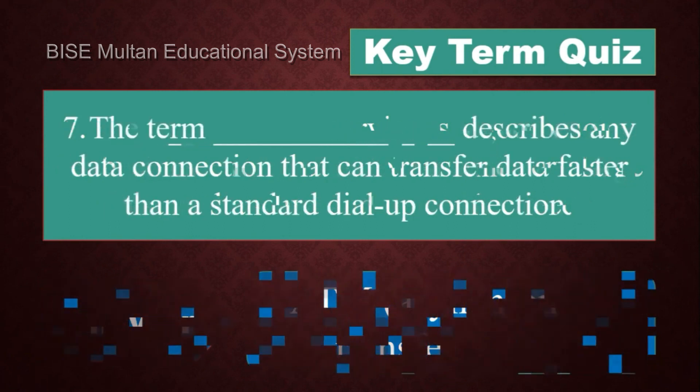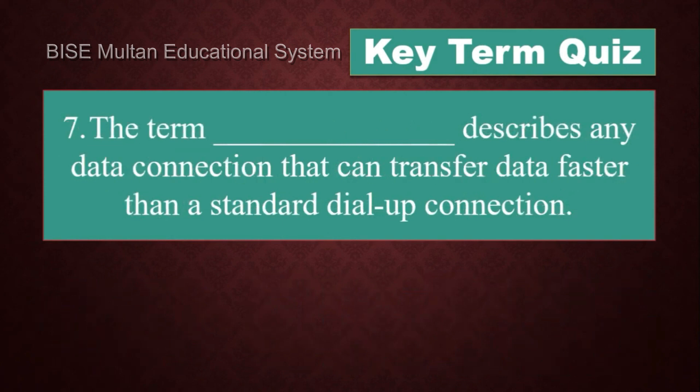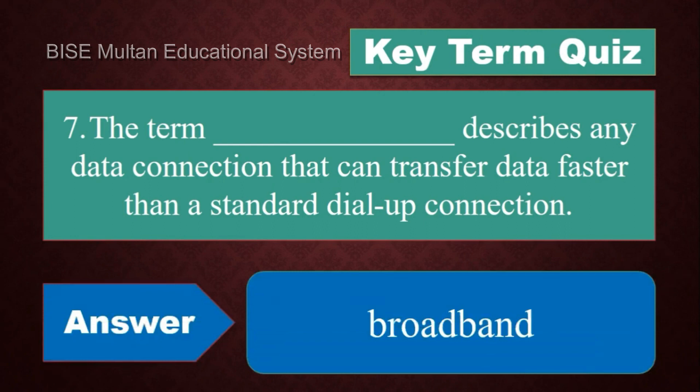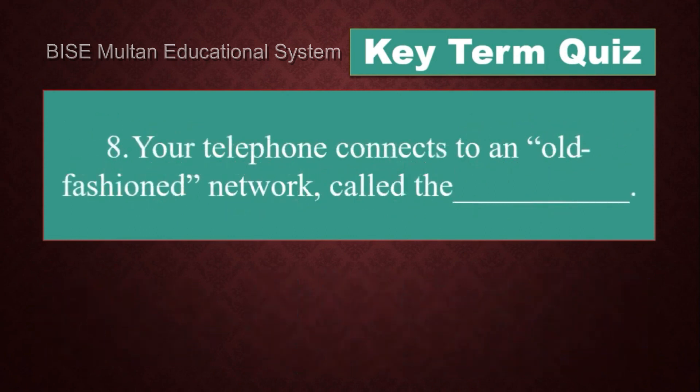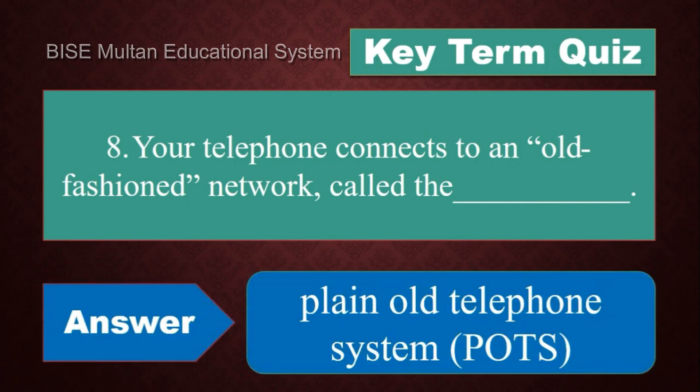Question number 7: The term dash describes any data connection that can transfer data faster than a standard dial-up connection. The answer is broadband. Question number 8: Your telephone connects to an old-fashioned network called the dash. The answer is plain old telephone system.